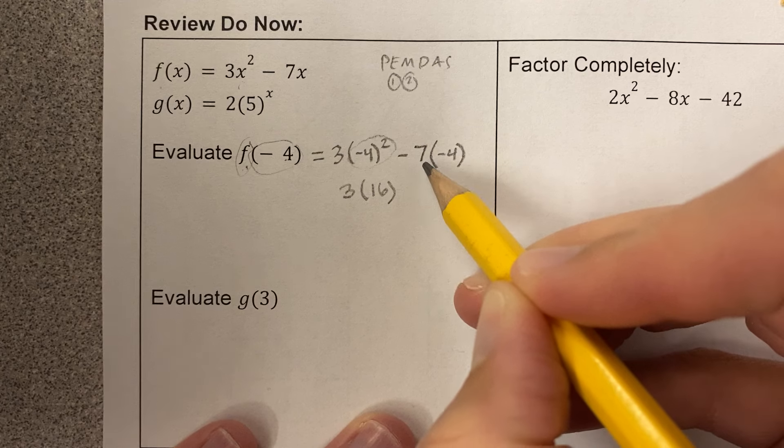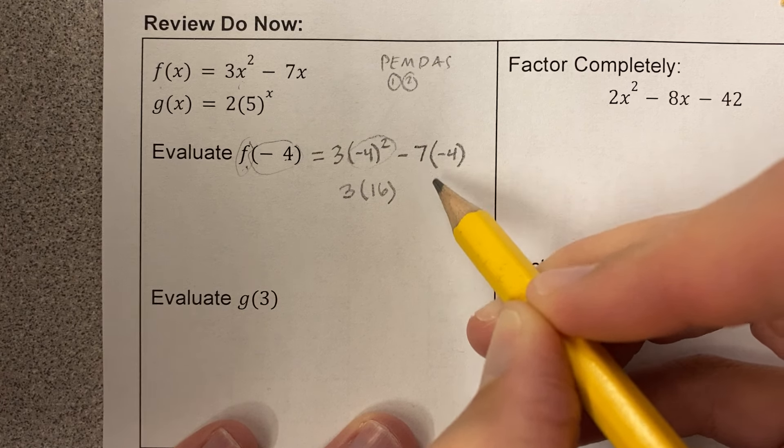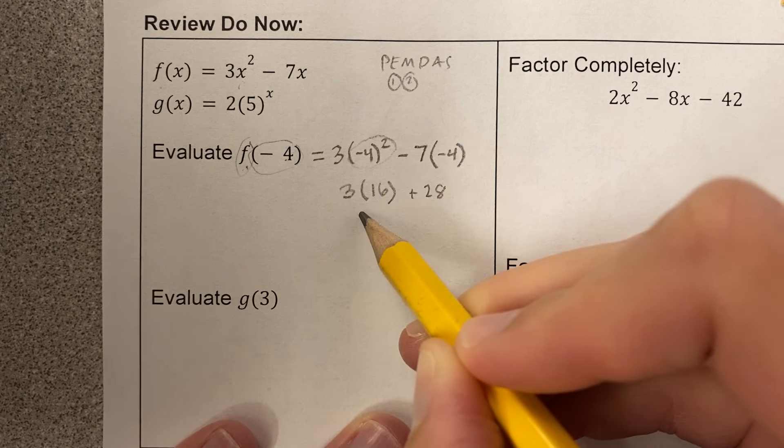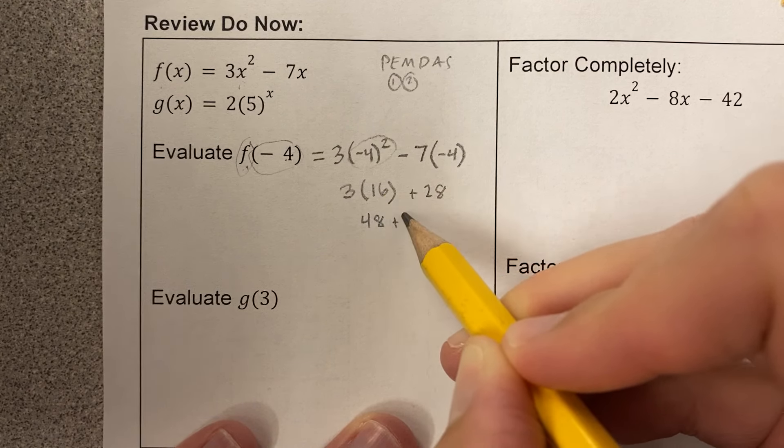And then here, I can bring this down, or I can just go ahead and do this multiplication in this step. This is negative 7 times negative 4. That's positive 28. So this becomes 3 times 16, which is 48, plus 28. Add it up, and I get 76.